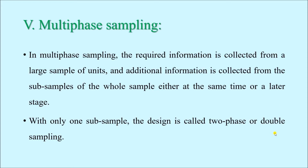Coming to multi-phase sampling: in multi-phase sampling, the required information is collected from a large sample of units, and the additional information is collected from the subsamples of the whole sample, either at the same time or at a later stage. Whenever we are conducting a study and have selected our sample, we first gather certain information from all the people in the sample. After that, if we need some additional information not available from all the people, we select a part of the sample — known as a subsample — and gather the additional information from them.